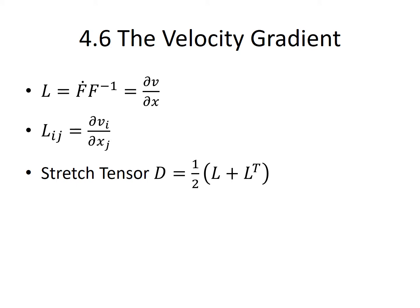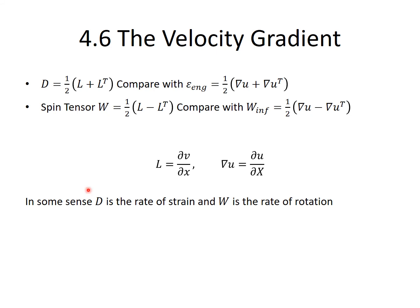The stretch tensor D is defined as the symmetric component of L, while the spin tensor W is defined as the skew-symmetric component. D can be viewed as the instantaneous analog to the small strain matrix, while W can be viewed as the instantaneous analog to the infinitesimal rotation matrix introduced earlier. In some sense, D is considered the instantaneous rate of strain, while W is considered the instantaneous rate of rotation.